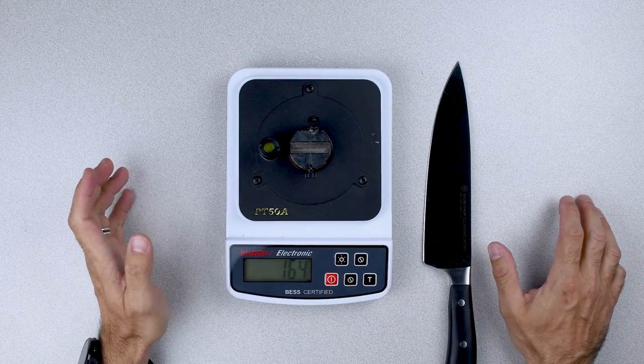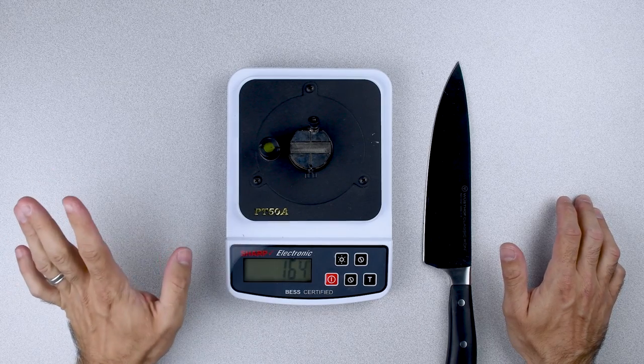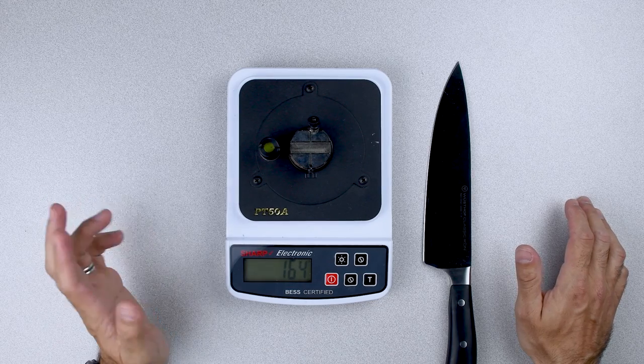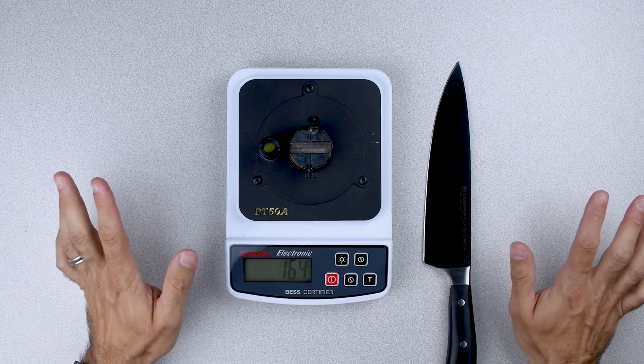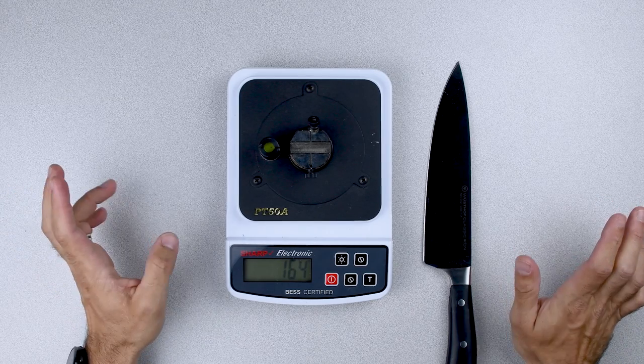So the Wusthof Classic Icon, fresh out of the box, if we're counting that score from the damage section, it's got an average edge sharpness of 114 grams. If we don't count that, it's 140 grams.